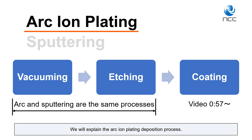We will explain the Arc-Ion Plating Deposition Process. The deposition process consists of three steps: vacuuming, etching, and coating.